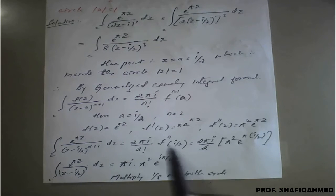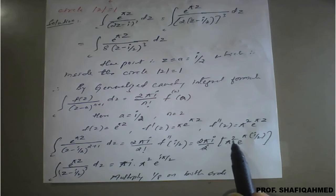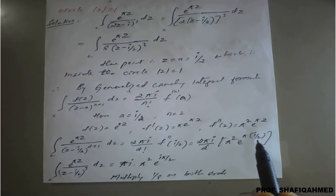I applied: 2 pi i upon 2 as it is. In this value you need to apply in f double dash of z. It will become pi square, this pi square as it is, e raised to pi of - in place of z you replace i upon 2.